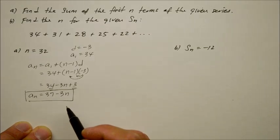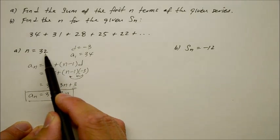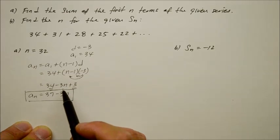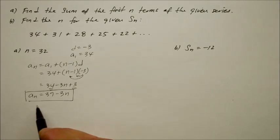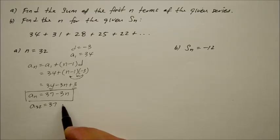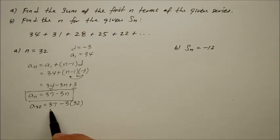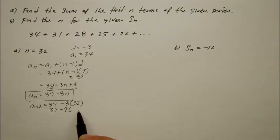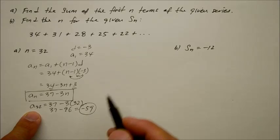Now we want to find the number at the 32nd spot of this sequence. So a sub 32 equals 37 minus 3 times 32. And 3 times 32 is 96. So that's 37 minus 96, which equals negative 59. So negative 59 is on the 32nd spot of this series.